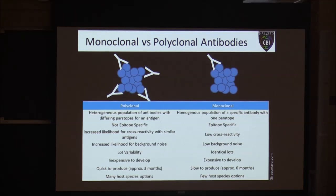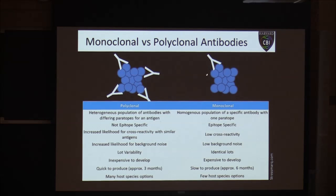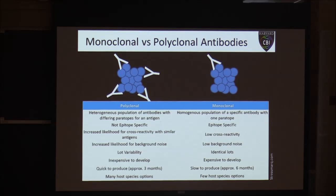We can freeze down those cells, thaw them out at a later date, and make more antibody — but it's just a single antibody to a single epitope. That's why it's called monoclonal. In a polyclonal situation we have a number of different antibodies recognizing different sites on the protein, whereas in the monoclonal model we just have a single antibody binding to a single epitope.